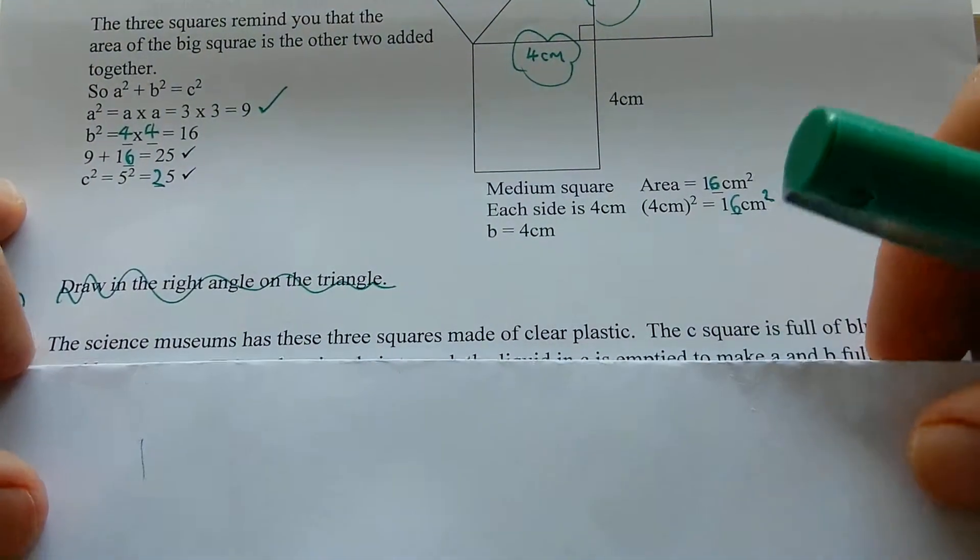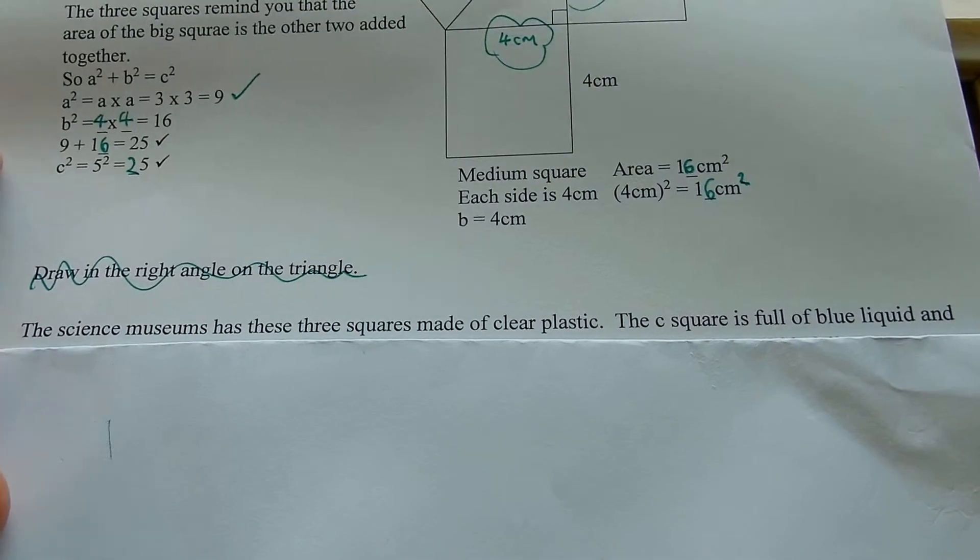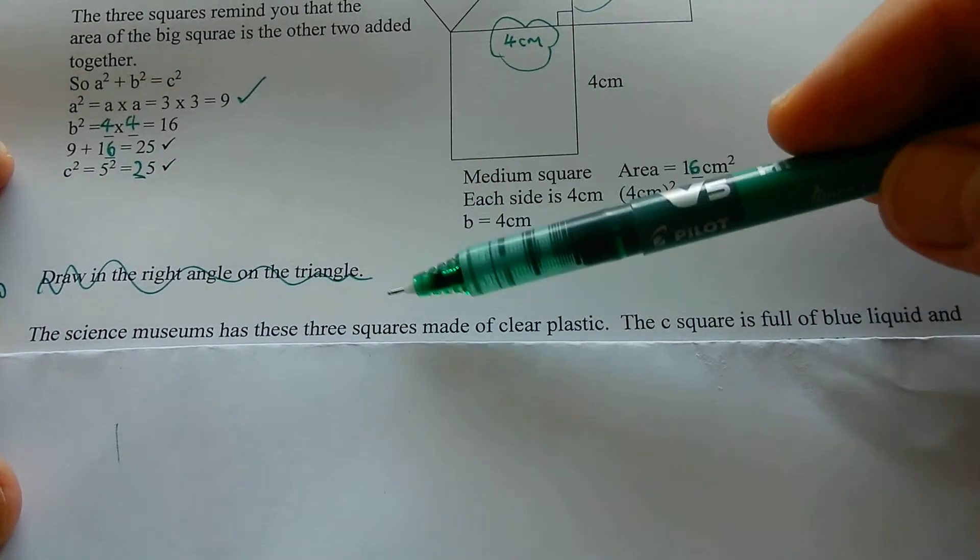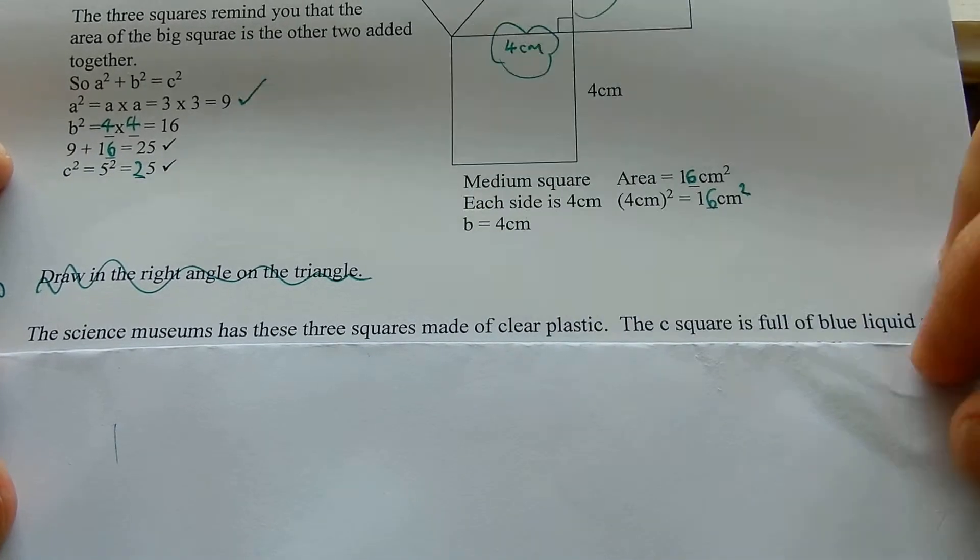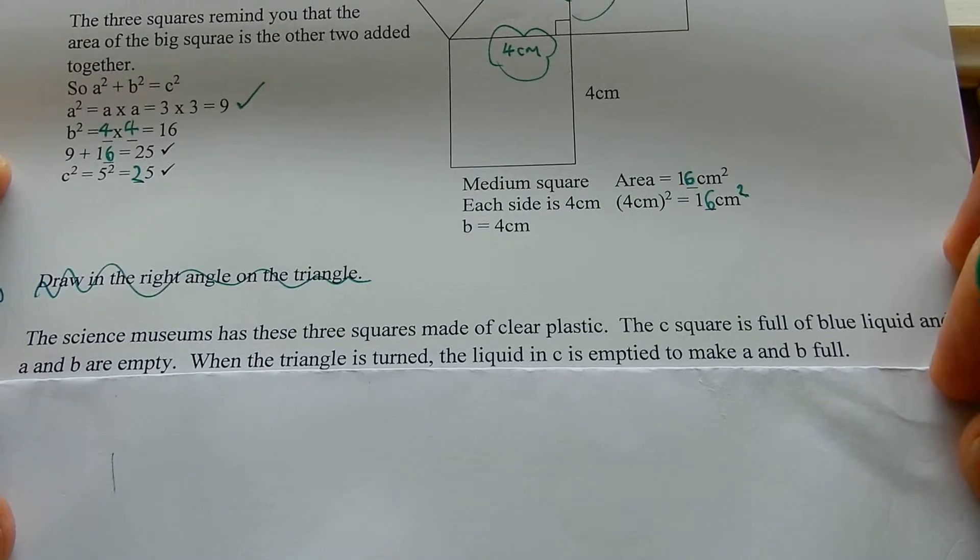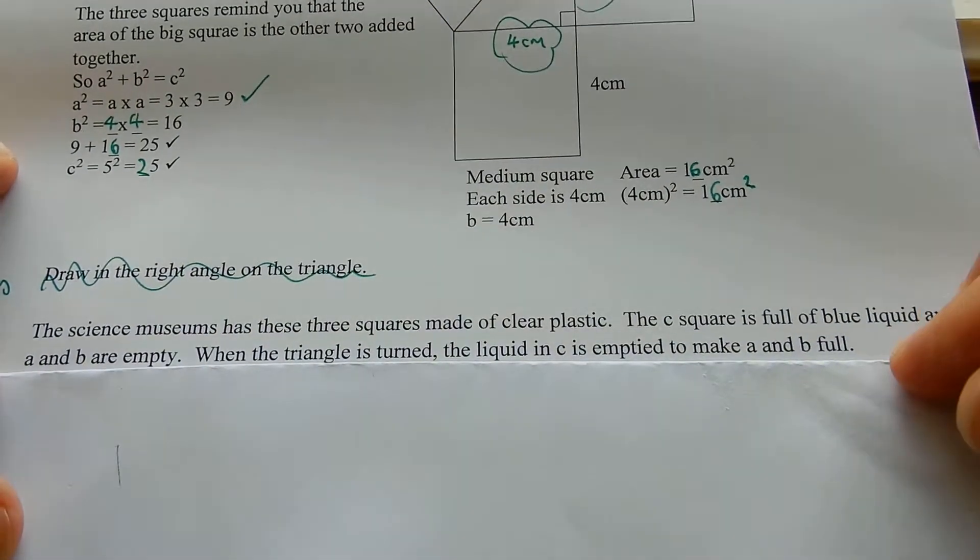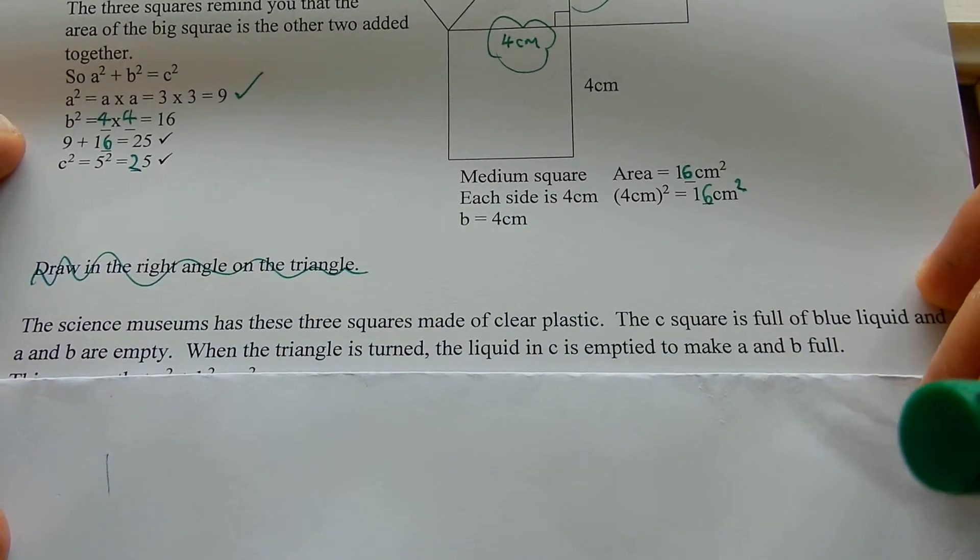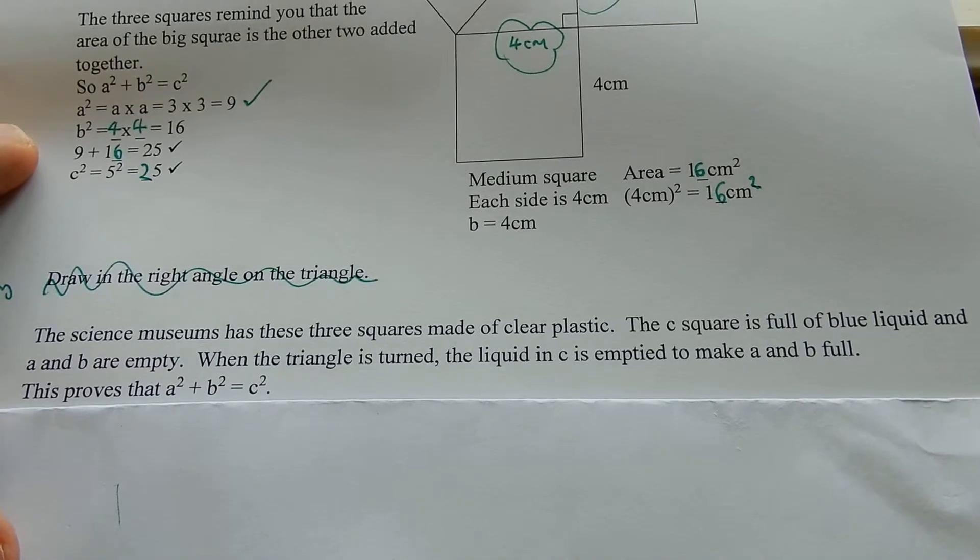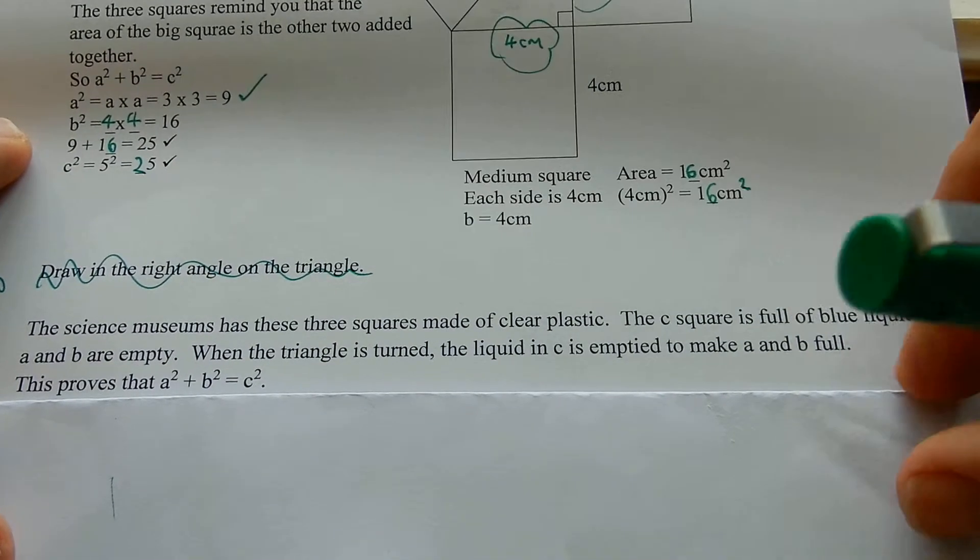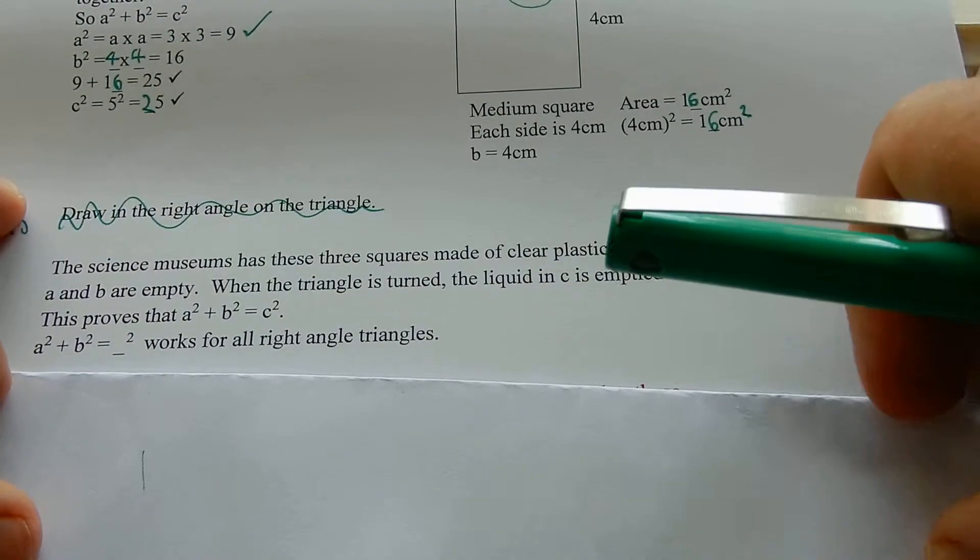The Science Museum in England, the one in London, the Science Museum has these three squares made of clear plastic. The C square is full of blue liquid and A and B are empty. When the triangle is turned around, you turn the knob in the middle and this all turns around. When it's turned around, the liquid in C is emptied into A and B. Emptied to make A and B full. This proves that A squared plus B squared equals C squared. So, it's done with liquid to prove that it works.